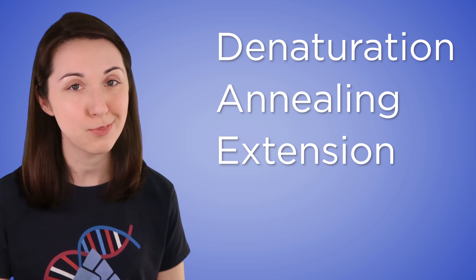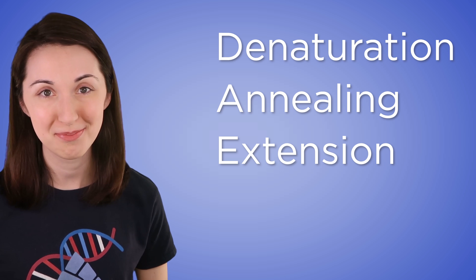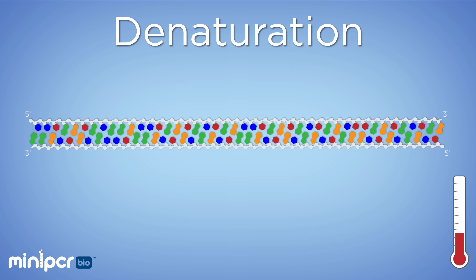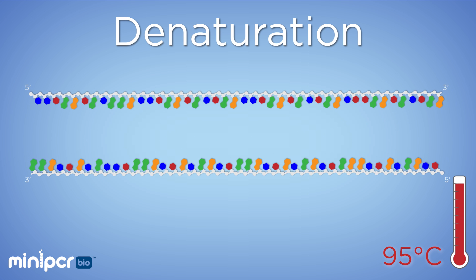The first step, called denaturation, involves separating the two strands of a starting DNA sample apart. This starting DNA sample is referred to as our template DNA. To do this, we heat the DNA up to about 95 degrees Celsius, almost reaching the boiling point of water. In just a few seconds, the high temperature causes hydrogen bonds between the two strands of DNA to break.